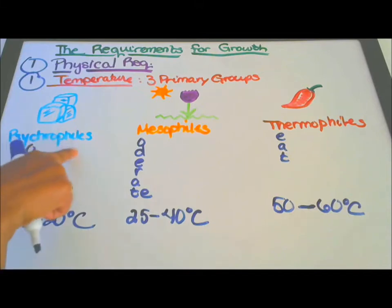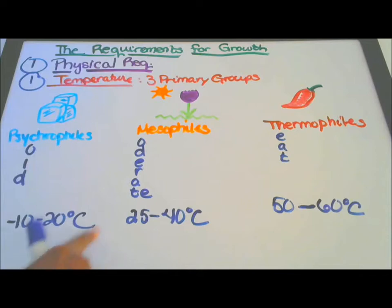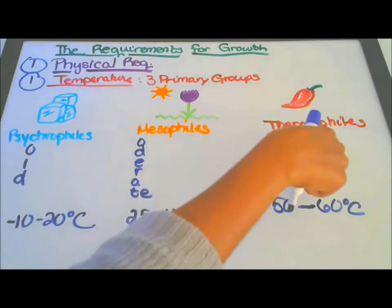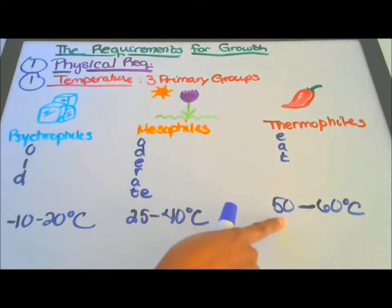So you have psychrophiles, cold, negative 10 to 20 degrees Celsius. Mesophiles, moderate, 25 to 40 degrees Celsius. Thermophiles, heat, 50 degrees to 60 degrees Celsius.